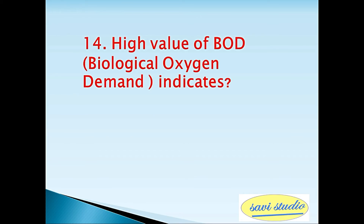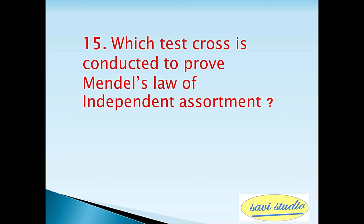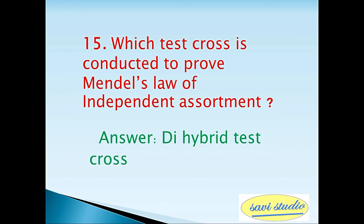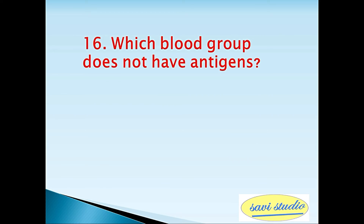Fourteenth question: A high value of BOD (Biological Oxygen Demand) indicates the water is highly polluted. Fifteenth question: Which test cross is conducted to prove Mendel's law of independent assortment? Answer: dihybrid test cross. Sixteenth question: Which blood group does not have antigens? Answer: O group.